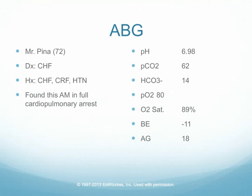Next, we look at the base excess of minus 11, which indicates a severe metabolic acidosis — a large proportion of this acidosis is coming from the metabolic system. Comparing the respiratory and metabolic contributions, it appears the metabolic system is contributing a significant factor. Lastly, an anion gap of 18 is above the normal range, indicating a metabolic acidosis caused by shock.